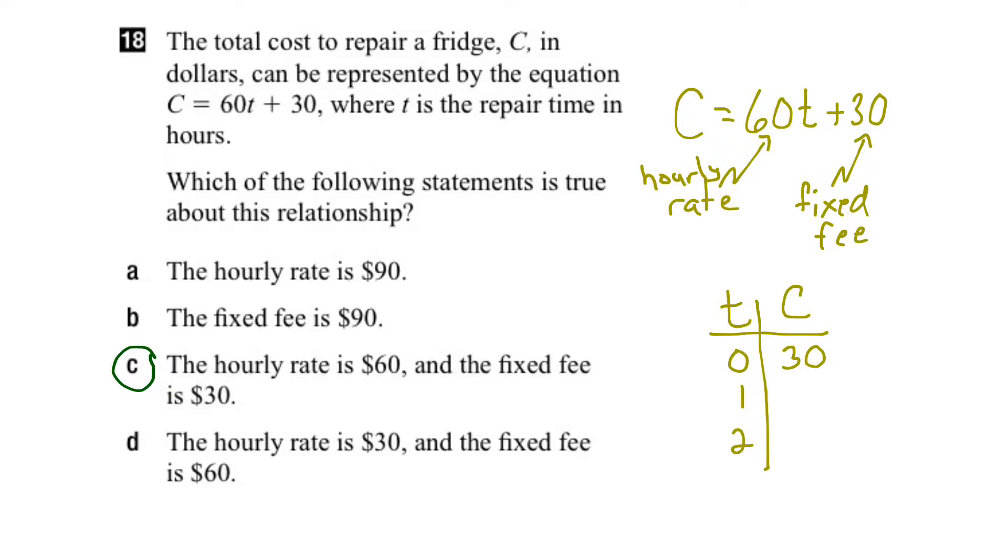And if it was 1, 60 times 1 would be 60 plus 30 would be $90. And if it was 2 hours, 60 times 2 is 120 plus 30 is $150.